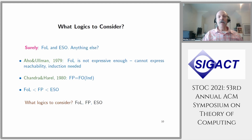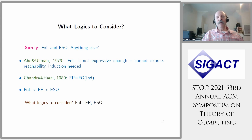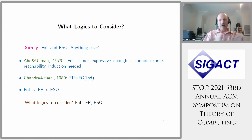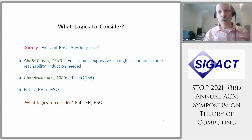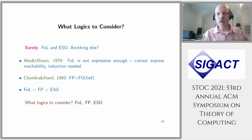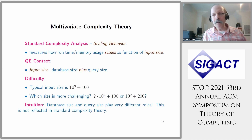Following Aho and Ullman, Chandra and Harel defined a new logic — fixed-point logic — which is first-order logic with induction, where the induction terminates when we reach a fixed point. This gives us a simple hierarchy of three logics: first-order logic, above it fixed-point logic, and above it existential second-order. This is a strict hierarchy. We consider these three logics, but there is still the subtle question of how to measure complexity.